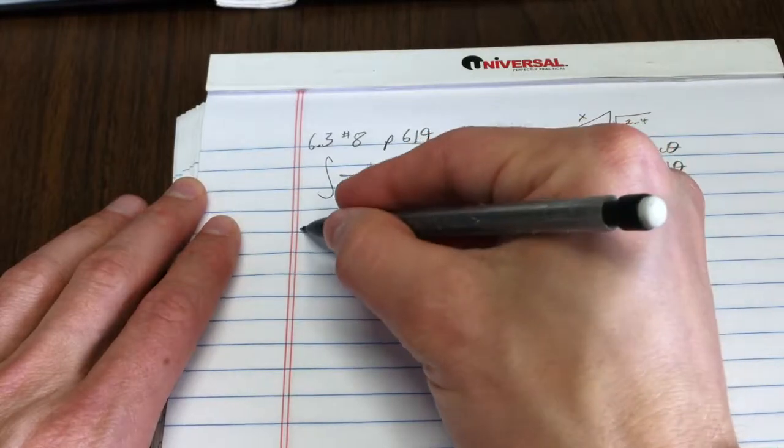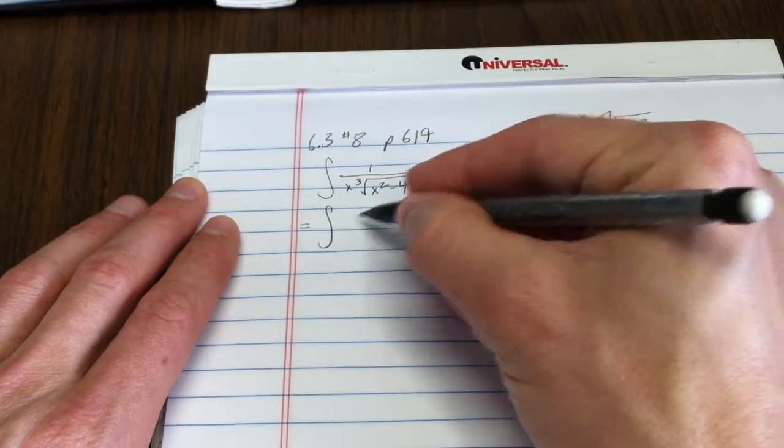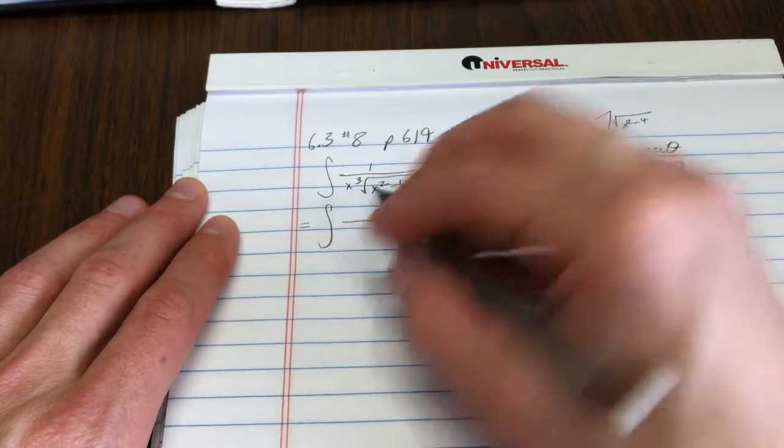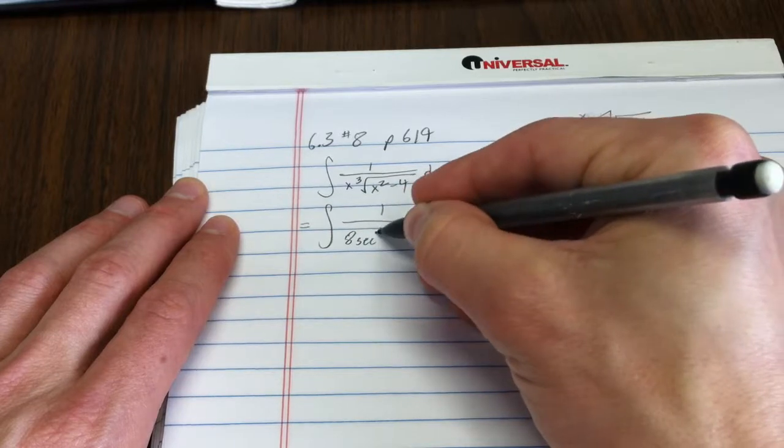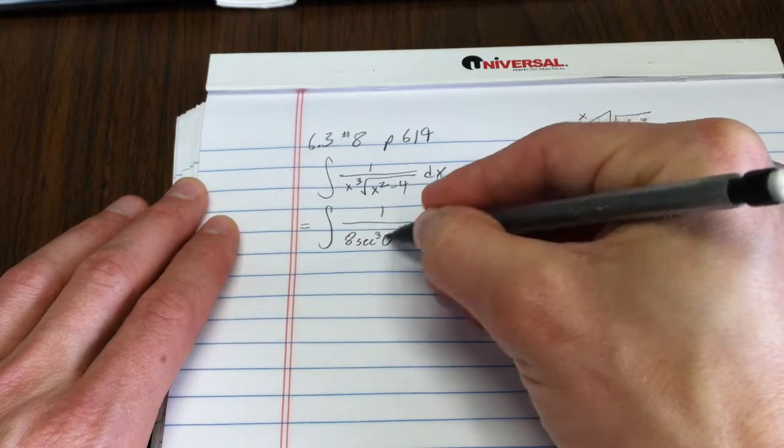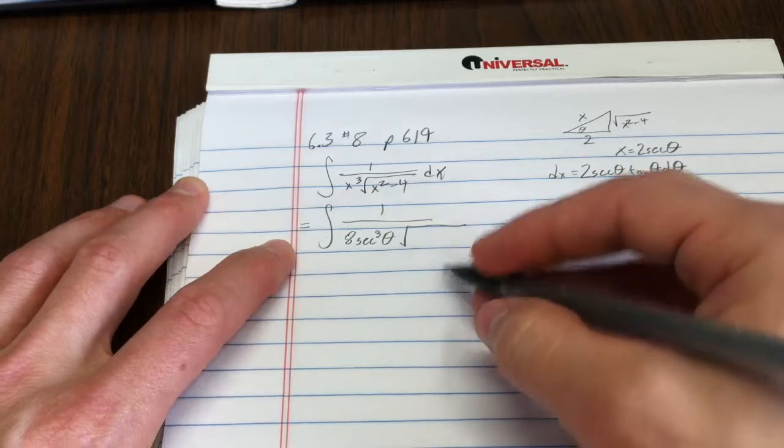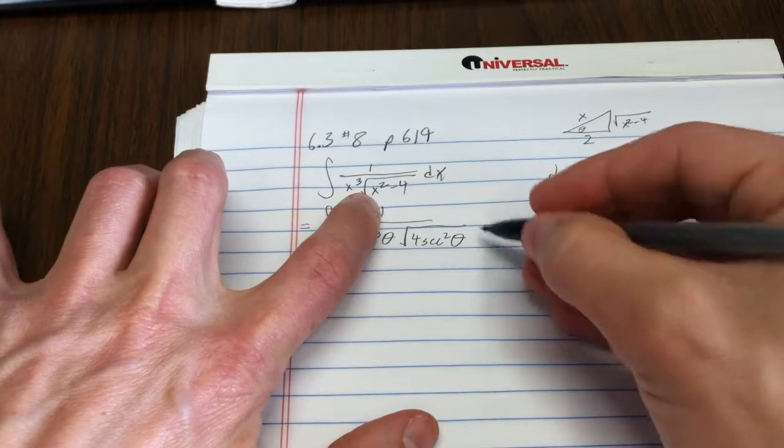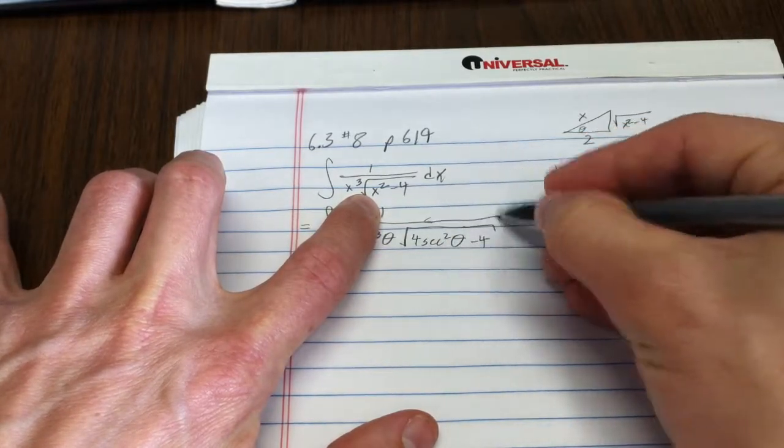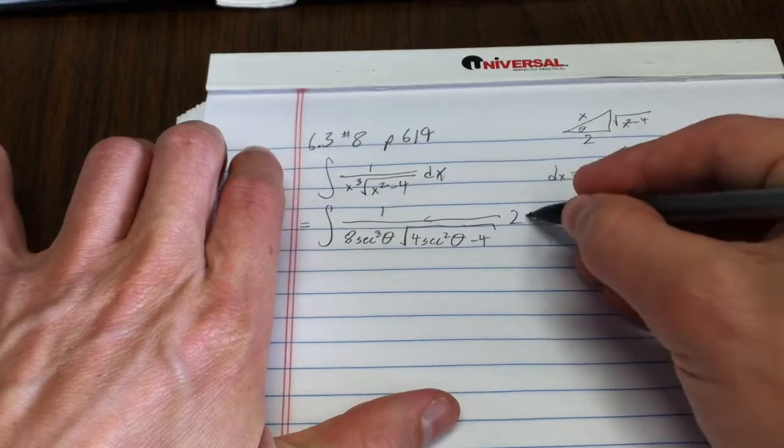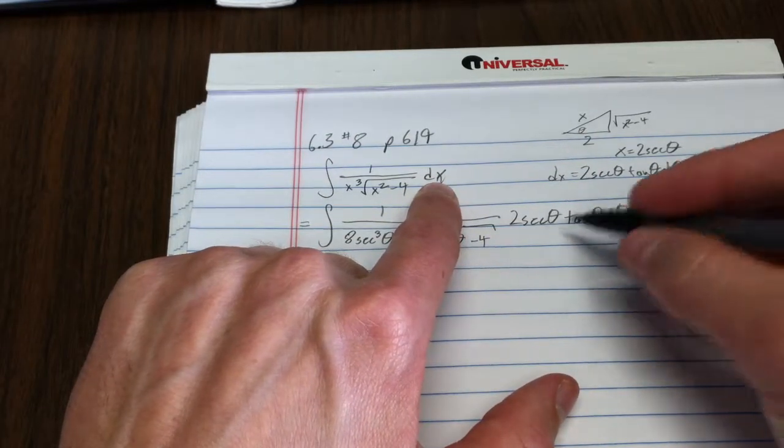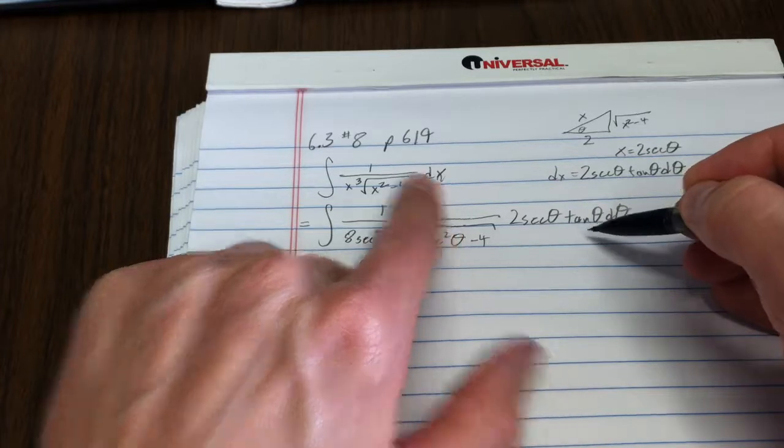Now we're going to do that trig substitution. So that's 1 over 2 secant theta cubed. So that's 8 secant cubed theta square root of 4 secant squared theta minus 4, and dx is equal to 2 secant theta tan theta d theta. Can't resist pointing out if you don't bother to write your dx, you're going to be in big trouble because you'll miss this whole chunk.